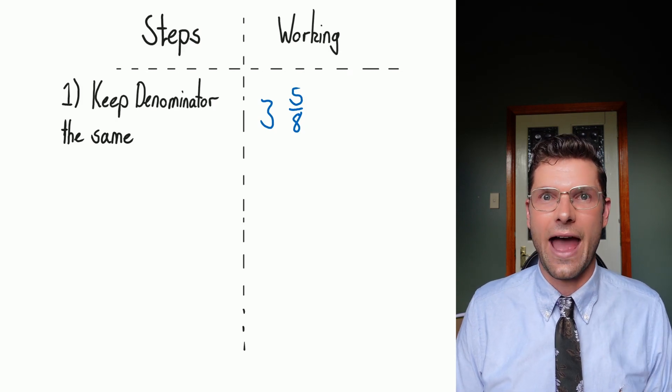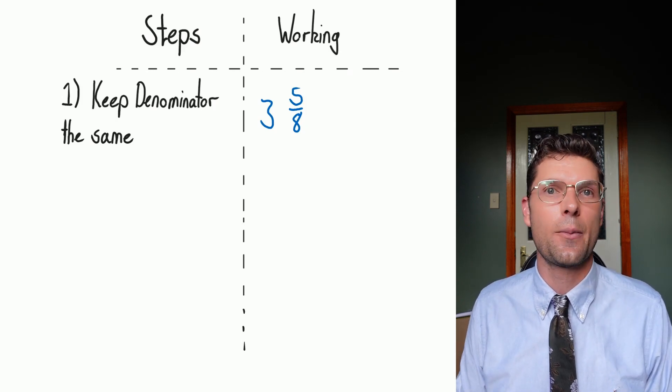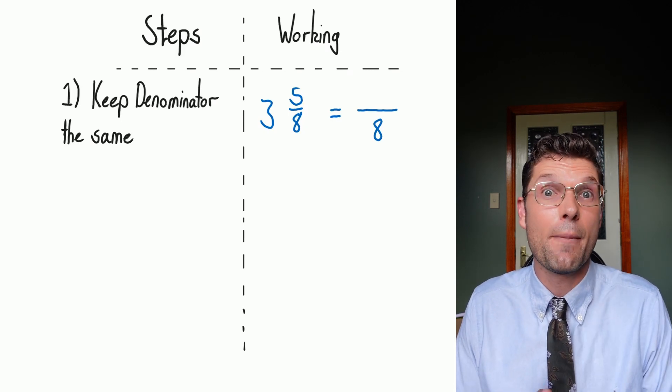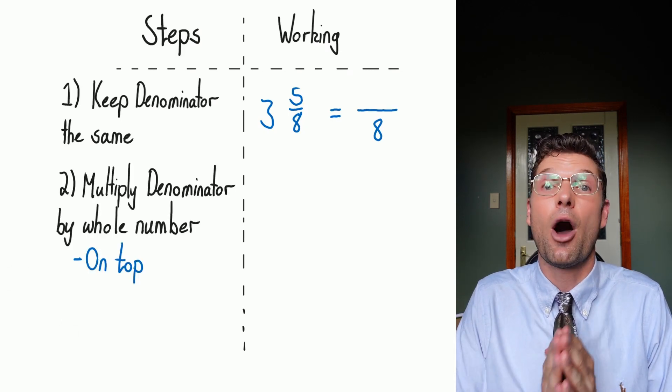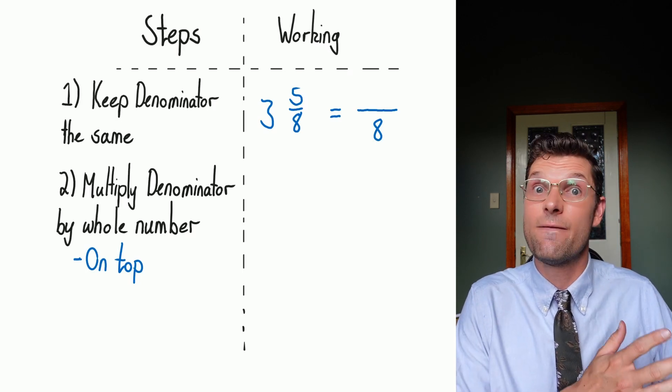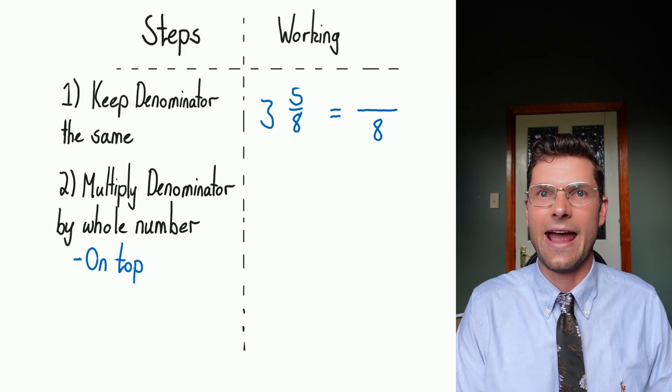So for this one, I've got three, five over eight. What I'm gonna do is keep the denominator the same. I'm actually gonna put this all over eight immediately. Now I've got to multiply the denominator, that eight, by the whole number that was out the front. So that three.